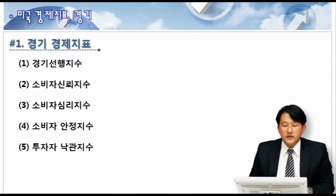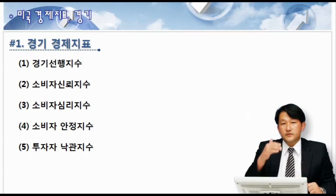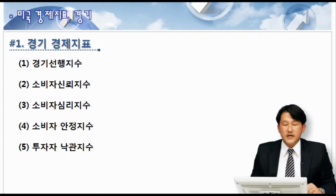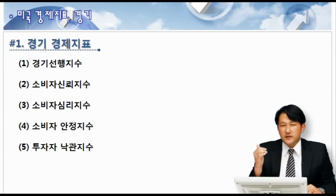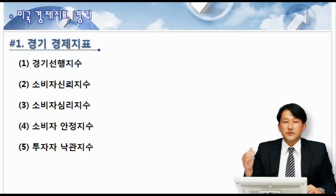말 그대로 경기라는 건 뭐예요? 우리가 앞에서 기초 시간에 한번 설명드렸죠. 경제의 흐름을 경기라고 했었죠. 영어로는 사이클입니다. 그 경기 사이클이 확장기가 될 수도 있고요, 수축기가 될 수도 있기 때문에